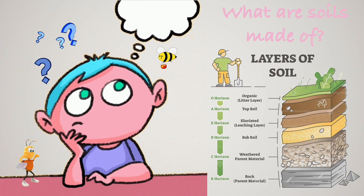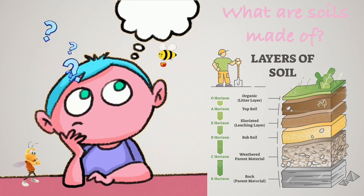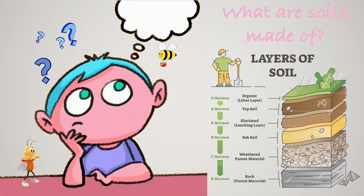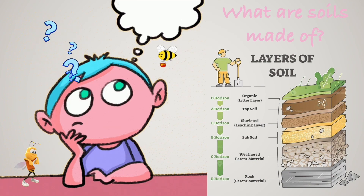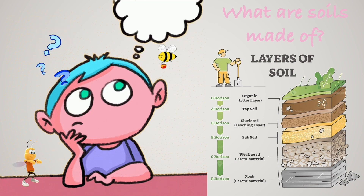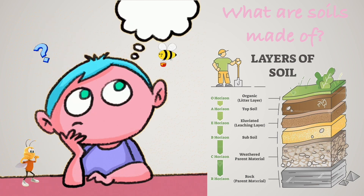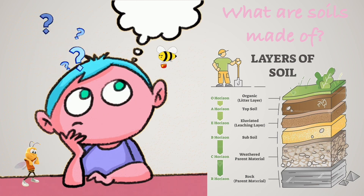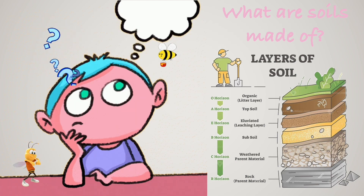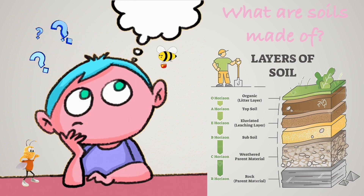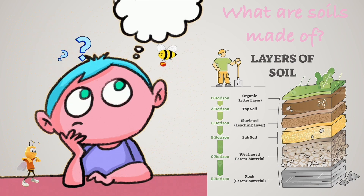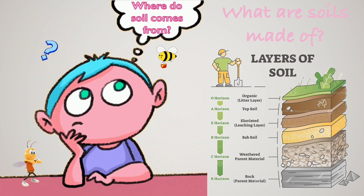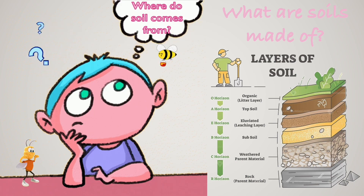Have you ever wondered: What are soils made of? If an area is made of the same basic rock materials, then what causes the differences in soil characteristics? Why are some soils different in texture, color, and properties? More importantly, where do soils come from?